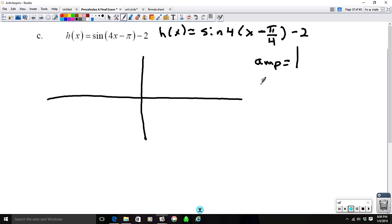So our amplitude is going to be equal to 1. Our period is 2 pi over 4, because our b is 4, 2 pi over b, which is pi over 2. It's asking for the phase shift.